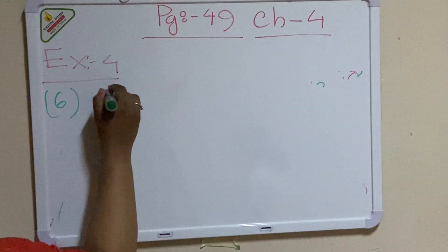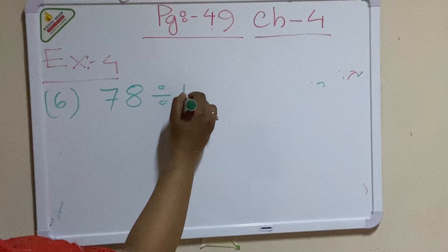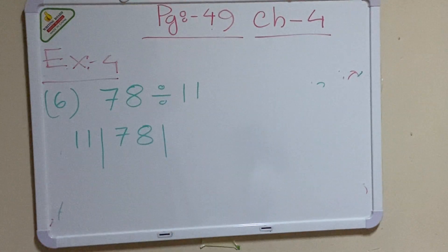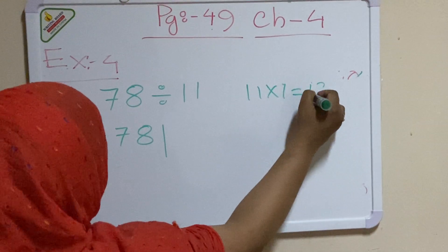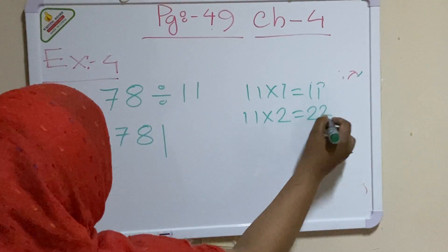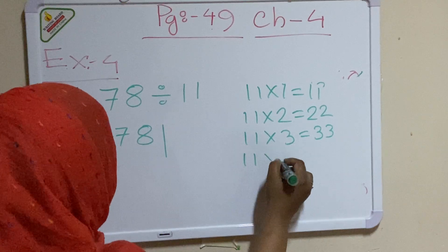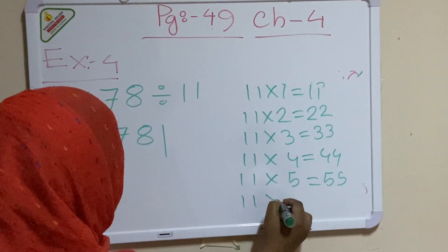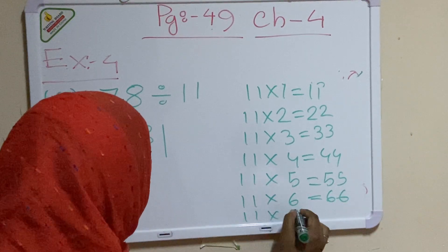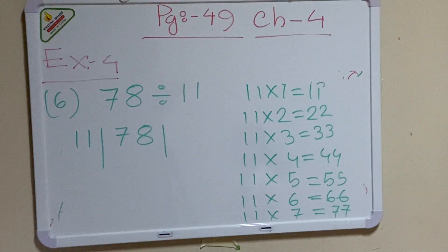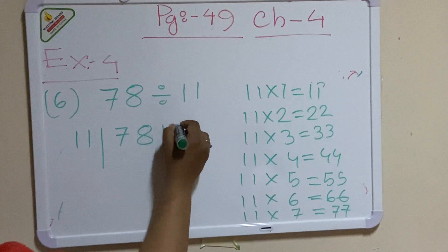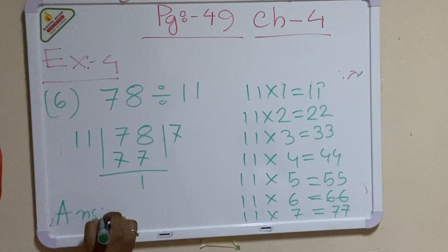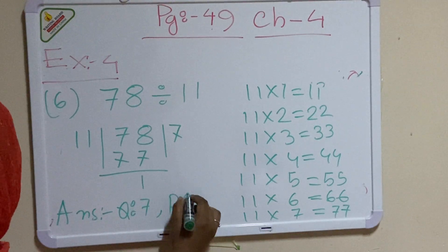Number 6 is 78 divided by 11. Write the table of 11: 11×1=11, 11×2=22, 11×3=33, 11×4=44, 11×5=55, 11×6=66, 11×7=77. The dividend is 78, so the closest number is 77. Therefore 11×7=77 and the remainder is 1. The answer is quotient 7, remainder 1. The table of 11 is easy to use here.